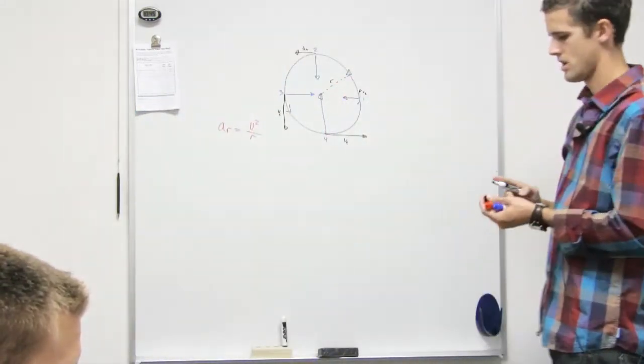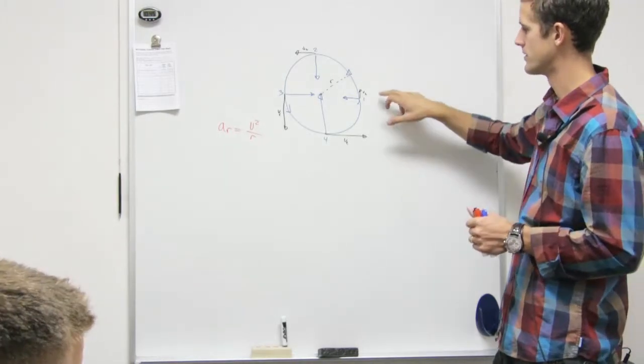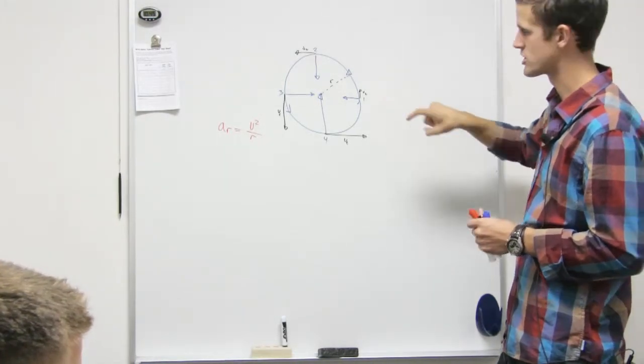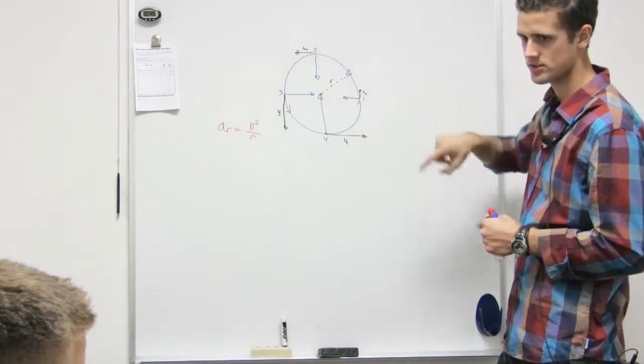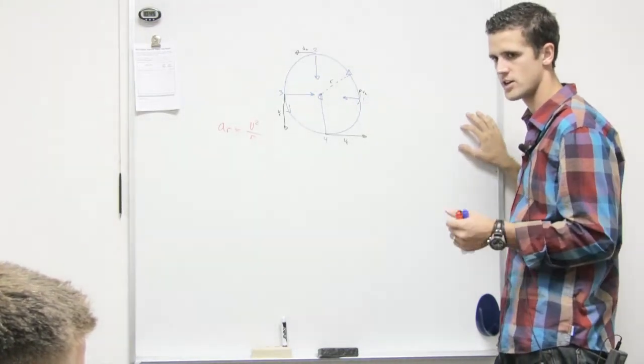All right. So if your tangential velocity is getting bigger, you're speeding up as you go around that circle. Okay, so is your tangential acceleration, what is it going to be?